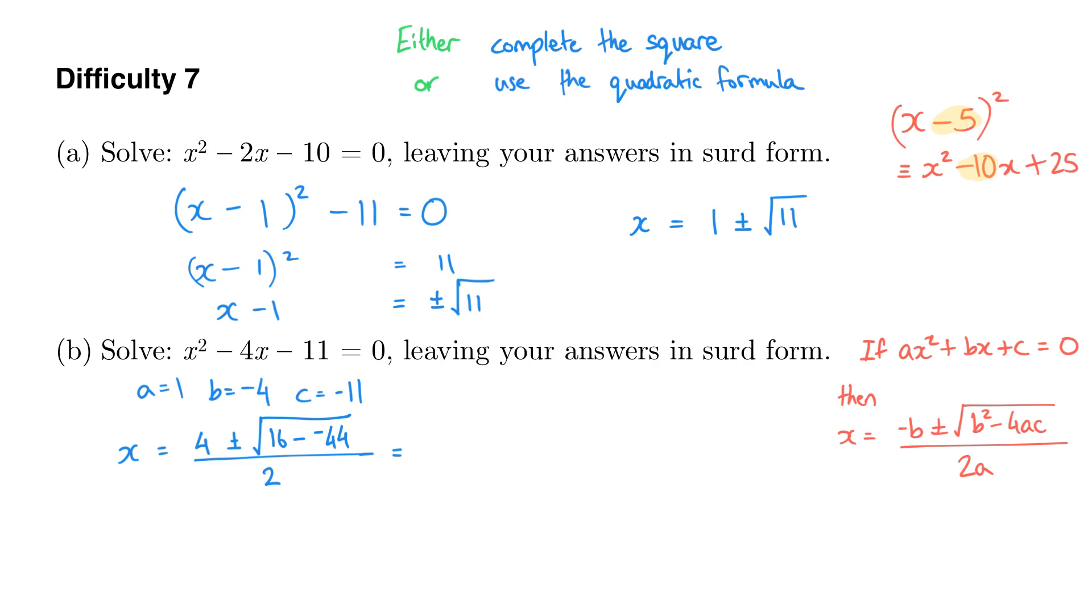Let's simplify what we've got in here. 16 minus negative 44 is the same as 16 plus 44, which is 60. So this is the same as 4 plus or minus the square root of 60 all over 2. Now we can split that up into 4 over 2 plus or minus the square root of 60 over 2. And 4 over 2 is just 2.